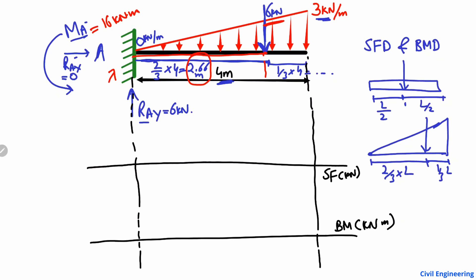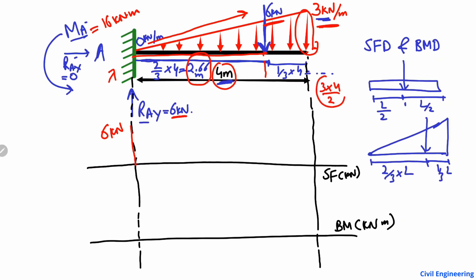To draw the shear force diagram, we start from zero. The support reaction of 6 kilonewton acts upward, so we go up to 6 kN. The triangular load increases along the beam, with maximum intensity of 3 kN/m at the fixed end over 4 meters. The total load = ½ × 3 × 4 = 6 kilonewton.